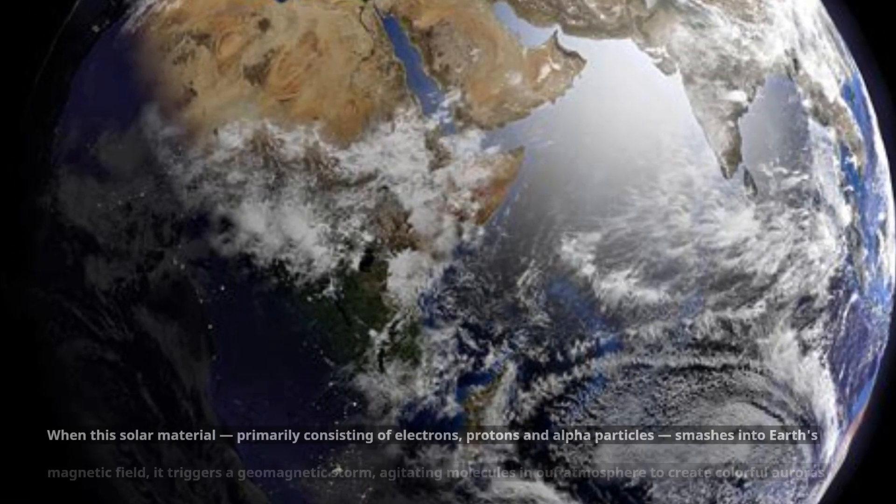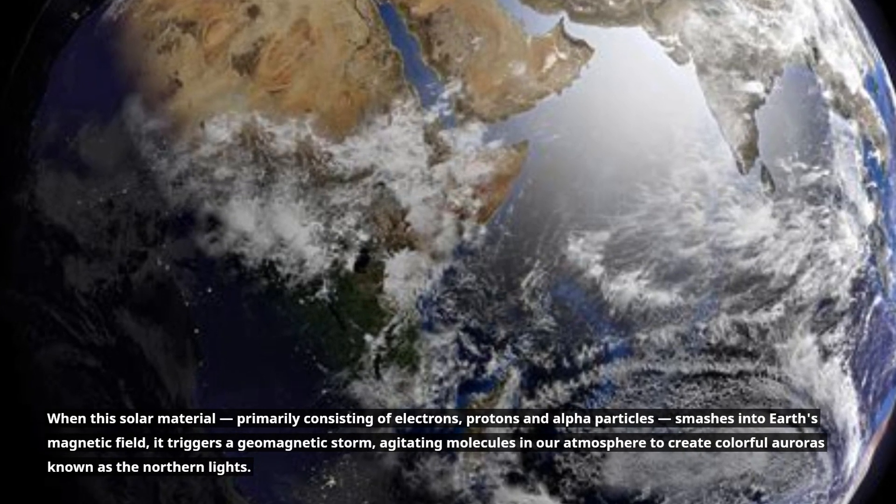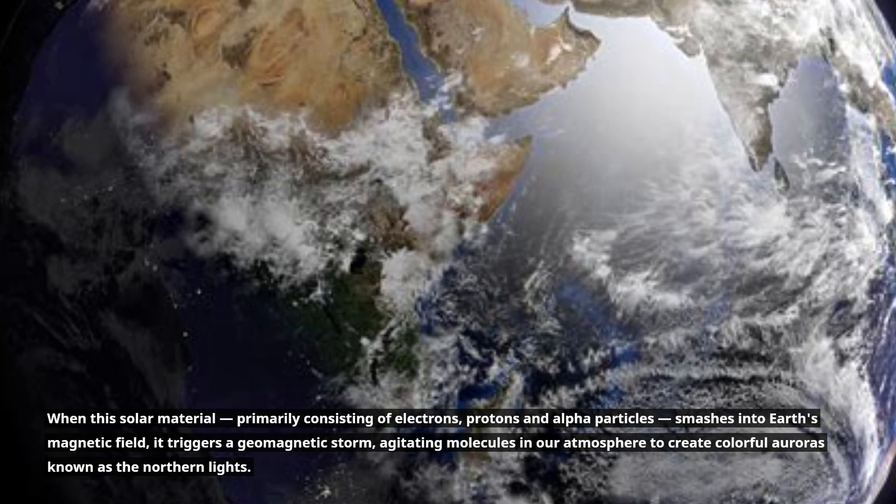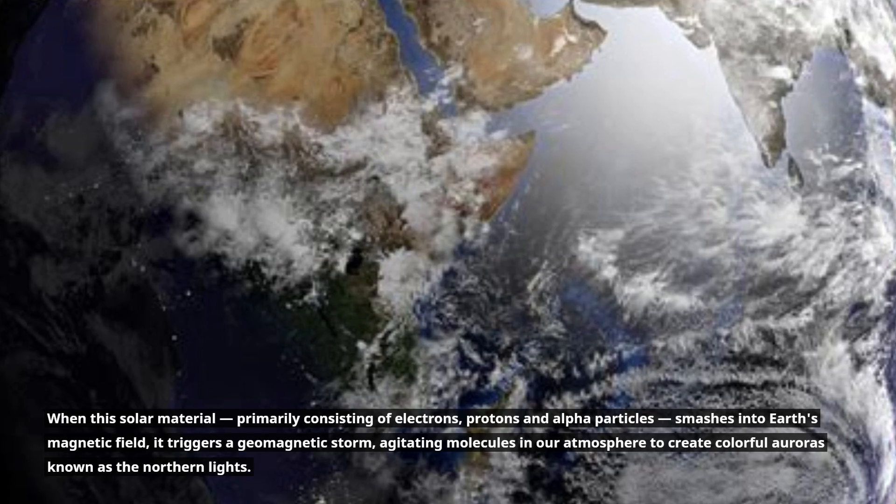When this solar material, primarily consisting of electrons, protons and alpha particles, smashes into Earth's magnetic field, it triggers a geomagnetic storm, agitating molecules in our atmosphere to create colorful auroras known as the Northern Lights.